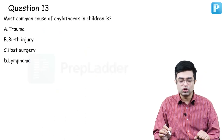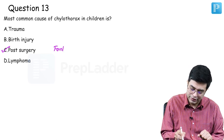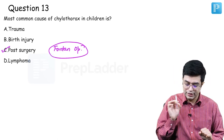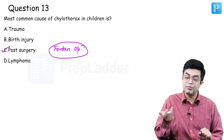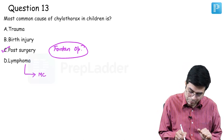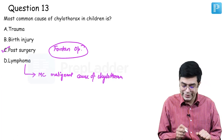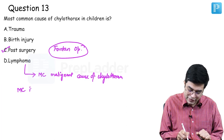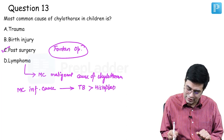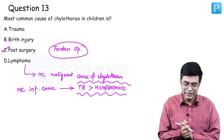Question number thirteen: most common cause of chylothorax in children — a one-liner. Most common cause is post-surgery; Nelson clearly says post-Fontan operation chylothorax is seen most commonly. Other causes include trauma, birth injury, and lymphoma. Lymphoma is not the most common cause but is the most common malignant cause of chylothorax in children. Most common infectious cause is tuberculosis followed by histoplasmosis — both are rare per Nelson but relatively common in India and Southeast Asia. Answer: C — post-surgery.